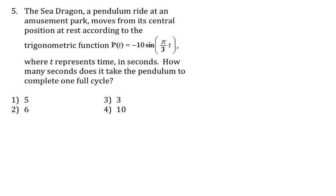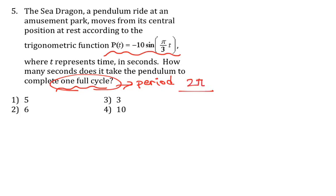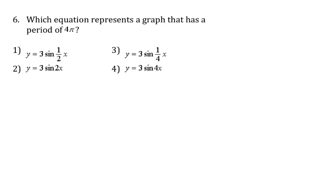Number 5: the Sea Dragon pendulum ride at the amusement park — they give us information where t represents time in seconds. How many seconds does it take the pendulum to complete one full cycle? We're looking for the period: 2π divided by the coefficient of t, which is π/3. Dividing by a fraction means multiplying by the reciprocal: 2π × (3/π) = 6. Choice 2 is the answer.